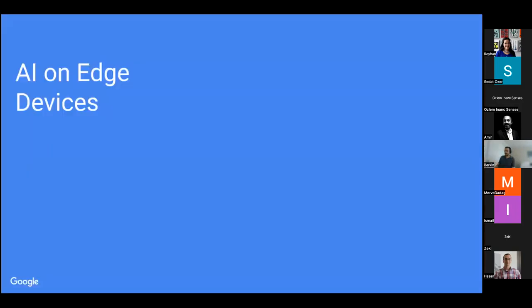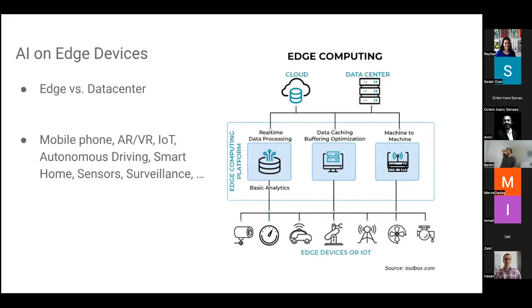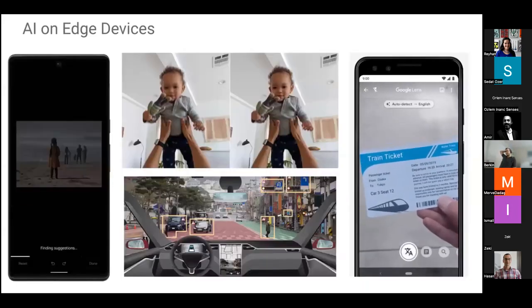Let's get started with AI on edge devices — why we need them and what an edge device actually is. When we talk about the edge, we're contrasting it against a data center. In a distributed computing environment, you have a cloud and data center doing expensive computations, and then leaf nodes in the network — mobile phones, IoT devices, smart home devices — and conventionally these edge devices do lightweight work and send data to the cloud for processing. But we're seeing a trend where AI workloads are being pushed to the edge.